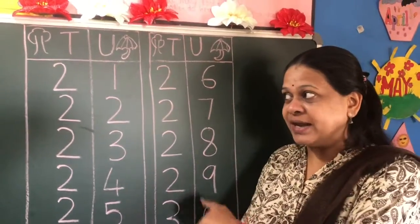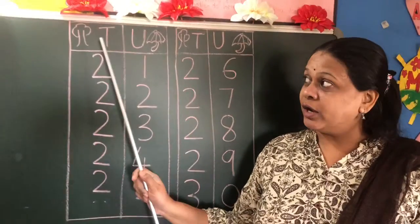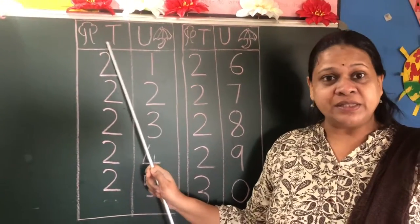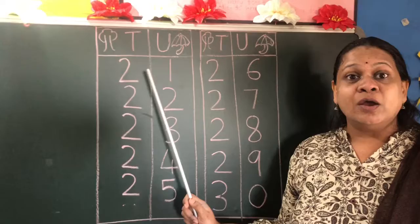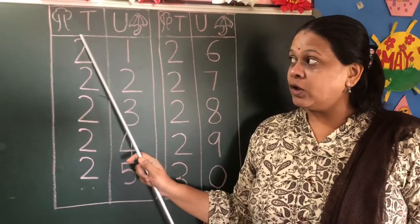Now what you have to do: you have to write numbers from 21 till 30 in your notebook. You have to draw it in 2 columns and then only you have to write, in the concept of tens and units.